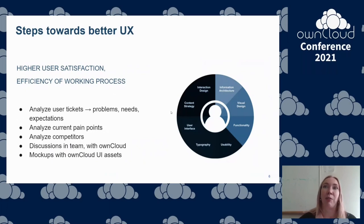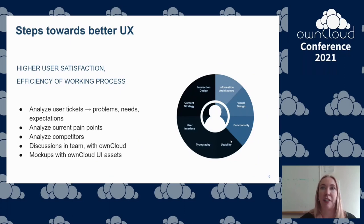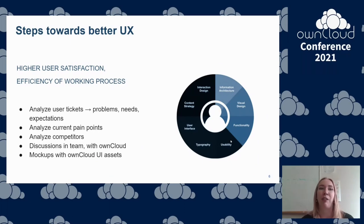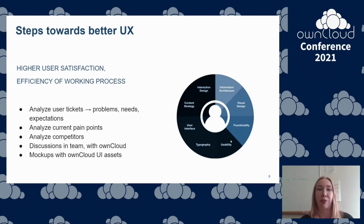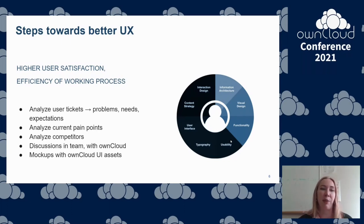User experience consists of many important different parts. At this stage, we focus primarily on the quality of interaction design and usability of the user interface rather than on visual design — this will be the next step. In the background, we analyzed user tickets to find problems, needs, and expectations. We analyzed current pain points of CERNBox and also analyzed some big players on the market of cloud solutions. We had discussions in our team and also with the ownCloud team, and created some mockups with ownCloud UI assets.